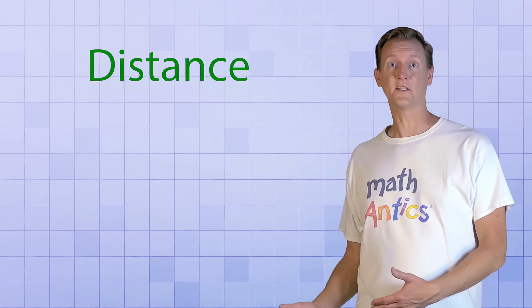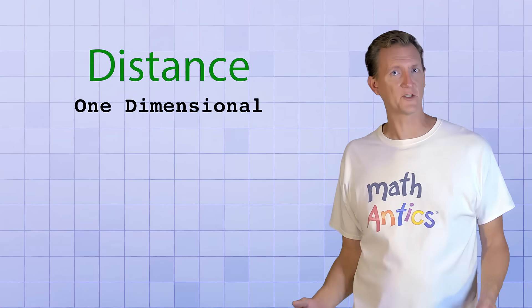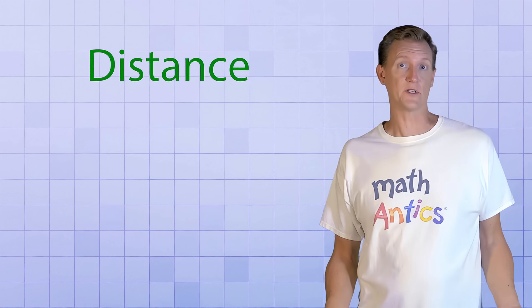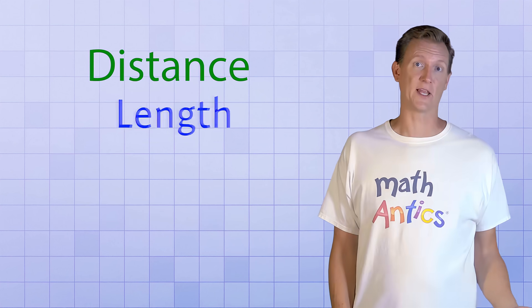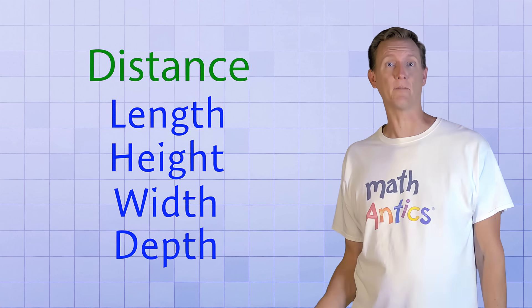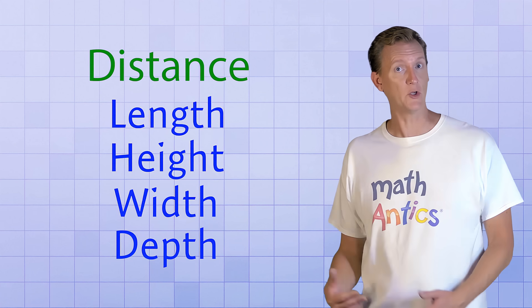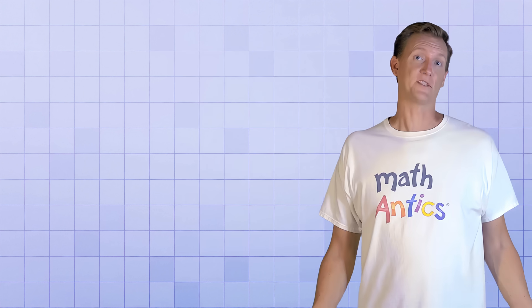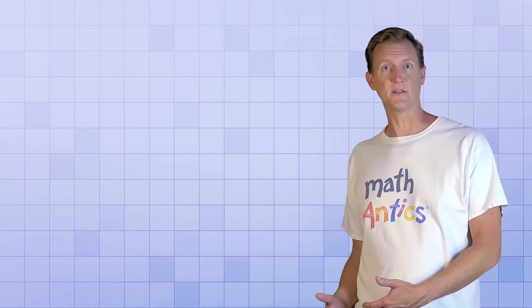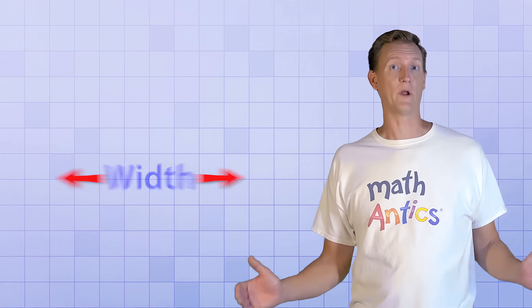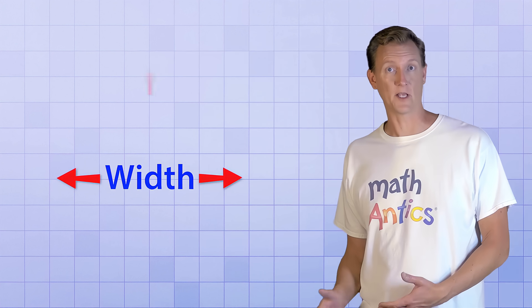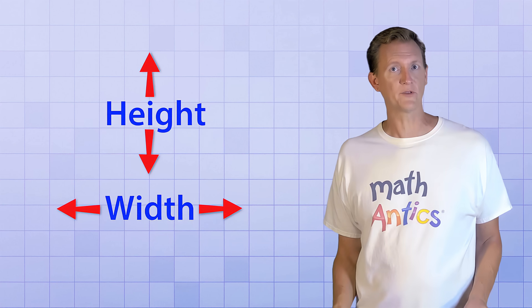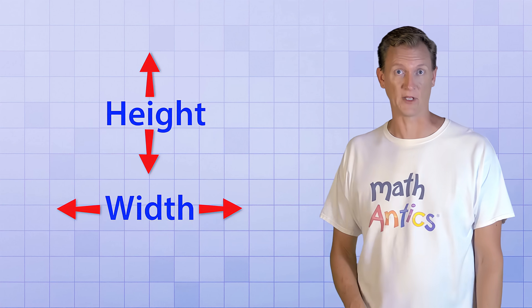As you probably know, distance is a one-dimensional quantity that describes how far it is between two points. Several different words are used as synonyms for distance, such as length, height, width, or depth. And the word you use usually depends on how an object is positioned relative to you. But no matter which word you use for distance, the same kind of units apply.